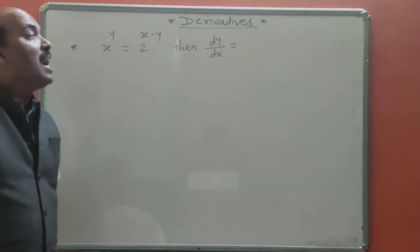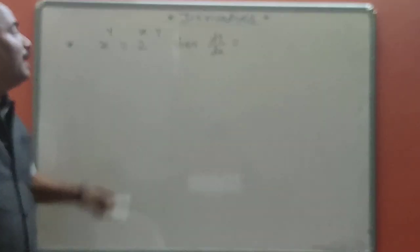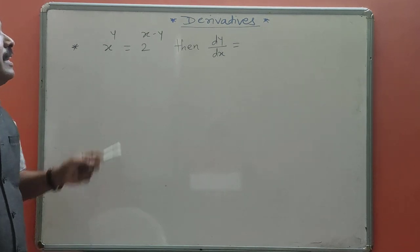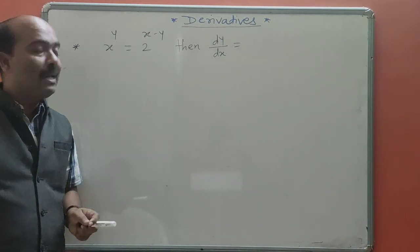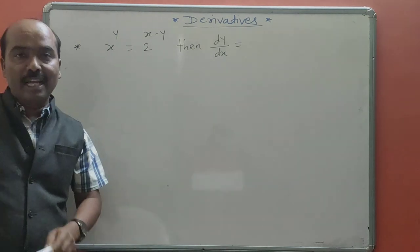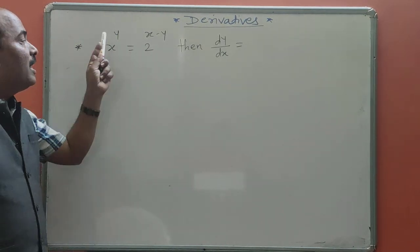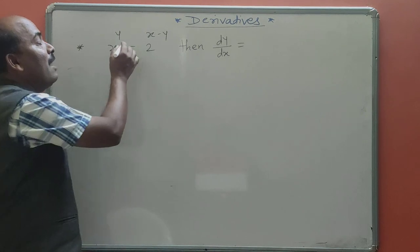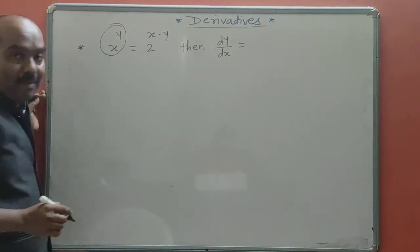Hello students. To start the next type, that is the Implicit Function. In a given function, when the variable y is directly available but in raise-to or power form, the function is called an Implicit Function.